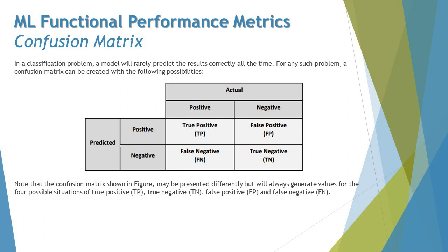If both predicted and actual are positive, it is a True Positive. If you predict positive but actual is wrong, it's a False Positive. If predicted is negative but actual was positive, it's a False Negative. And negative-negative is referred to as True Negative. Getting used to these terms takes a bit of time, but if you're already working in this field, these metrics will make sense.